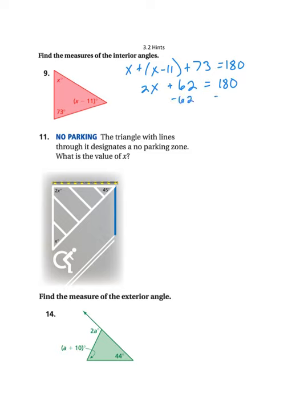I'm going to go ahead and subtract 62 from both sides, and I get 2x equals 118. And then I'm going to divide both sides by 2, and I get x equals 59.